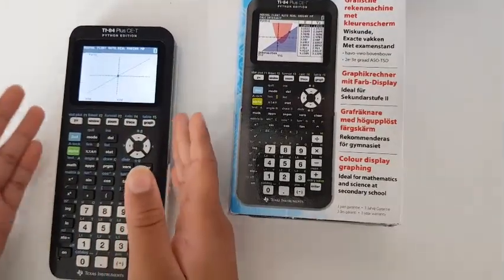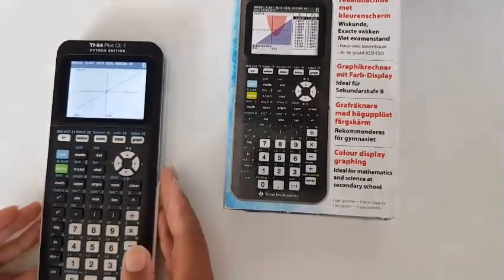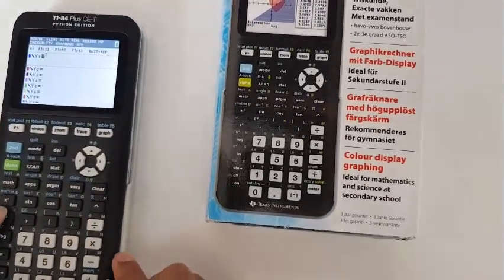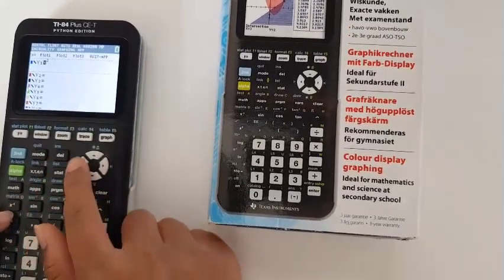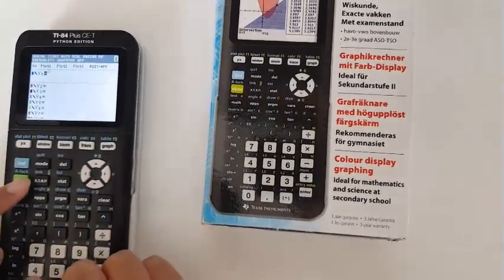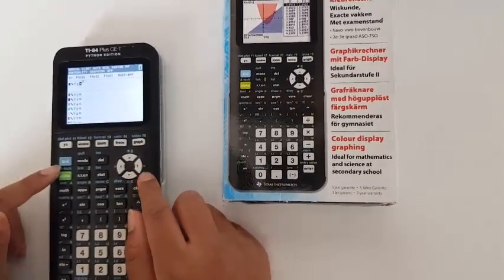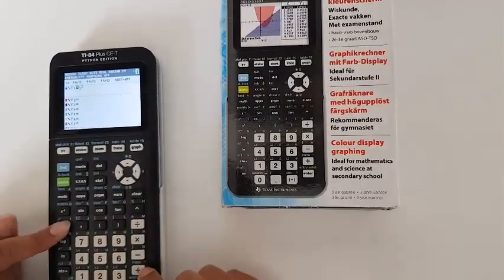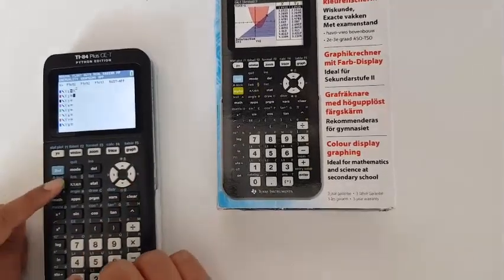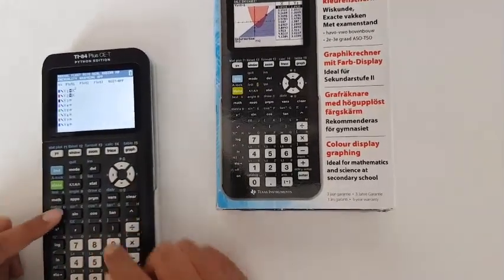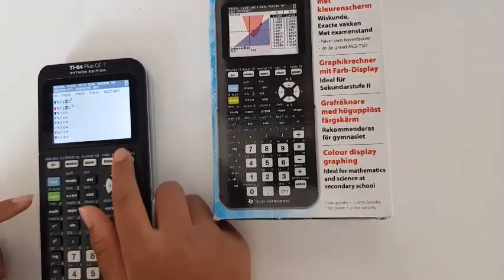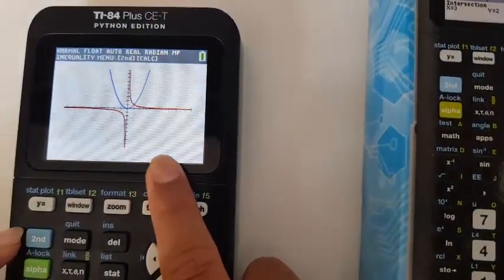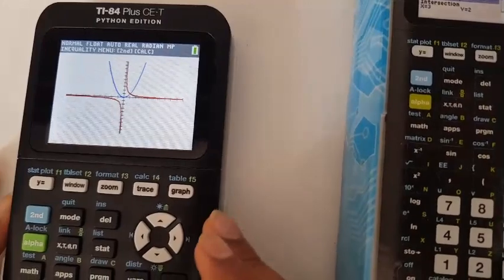So now let's graph a much more complex graph. Let's say if you have X square, and then let's scroll down and then just do another one, X power minus one. It's pretty good at graphing pretty complex problems as well. You get the nice parabola and hyperbola.